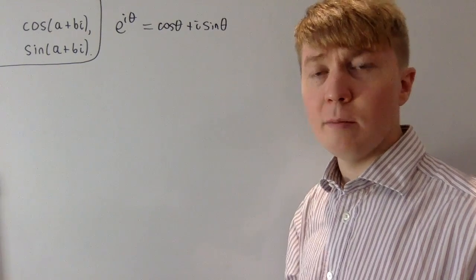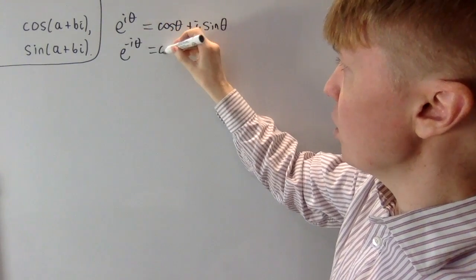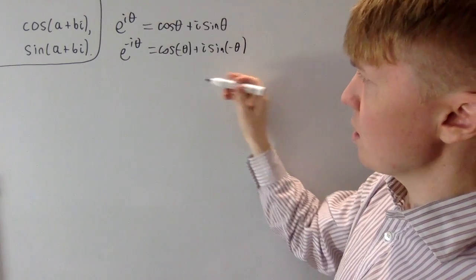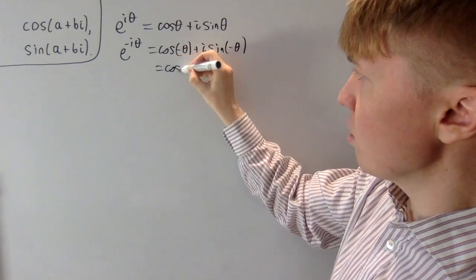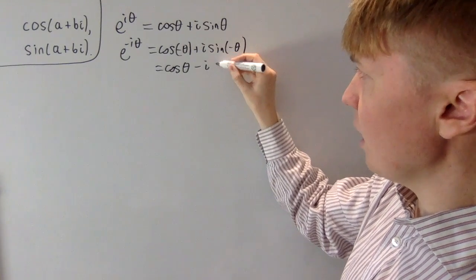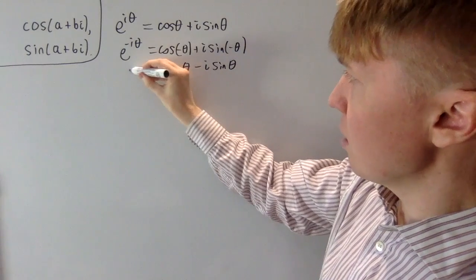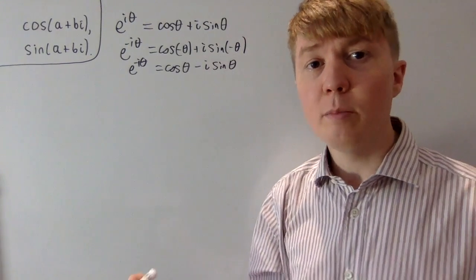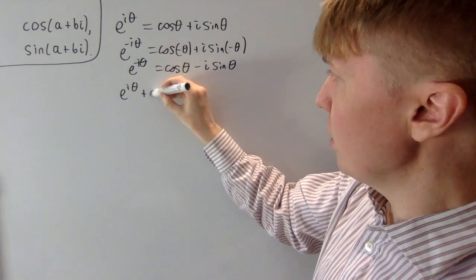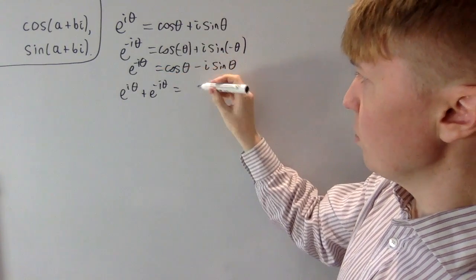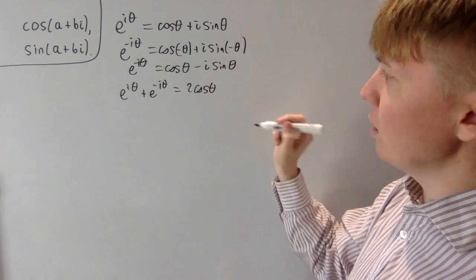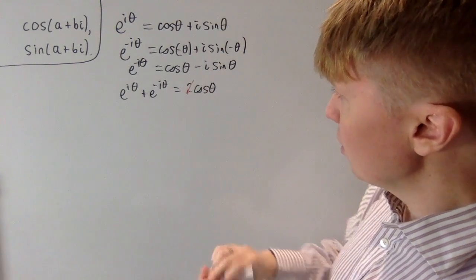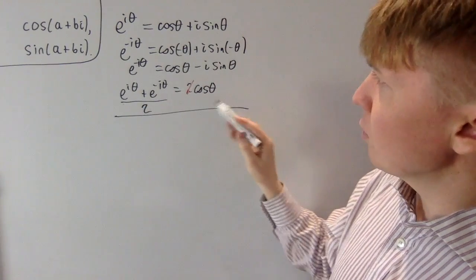If we substitute minus theta into this formula, e to the minus i theta is cos minus theta plus i sine minus theta. Cos minus theta is just the same as cos theta, and sine minus theta is just the negative of sine theta. So we get a nice expression for e to the minus i theta. Treating these two equations as simultaneous equations and adding them together, e to the i theta plus e to the minus i theta gives two cos theta. Dividing both sides by two gives us a nice expression for cos theta.